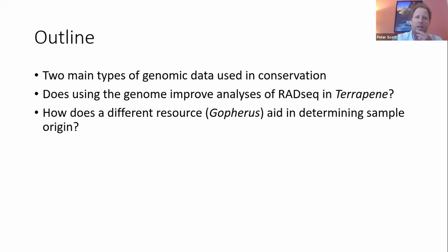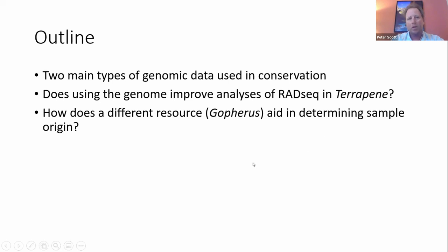What we're going to talk about is the two main types of genomic data used in conservation, and then whether using this genome helps improve analyses of RadSeq data — which is the sort of data JJ was talking about previously — in box turtles. We'll also talk about some other work we've been doing in Mojave desert tortoises in determining provenance of individuals, and compare and contrast these approaches to think about what sort of data we'd want to collect for repatriation.